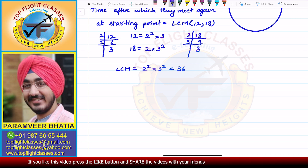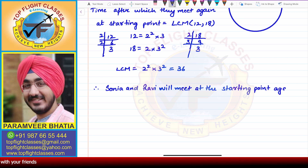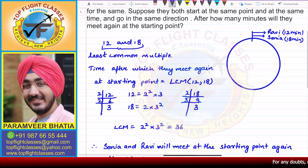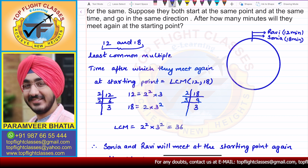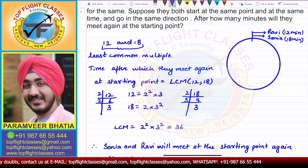Therefore, Sonia and Ravi will meet at the starting point again after 36 minutes. Since Ravi covers one round in 12 minutes and Sonia covers one round in 18 minutes, they will definitely meet after some multiple of both 12 and 18. That is why whenever we need a number that comes after two given numbers, we use the least common multiple.